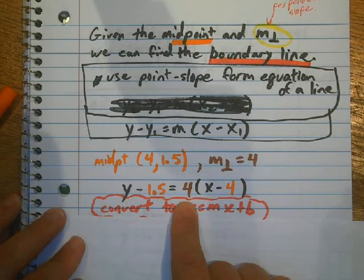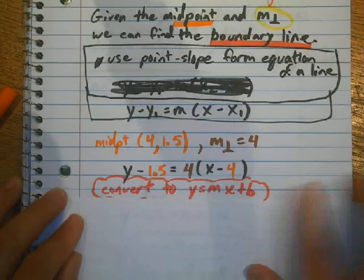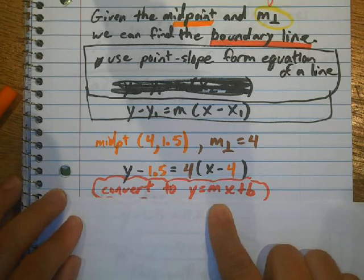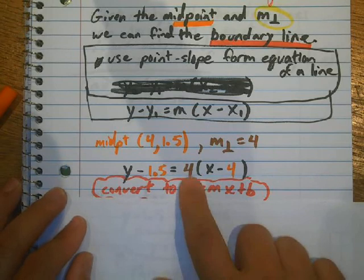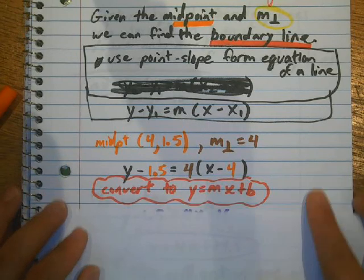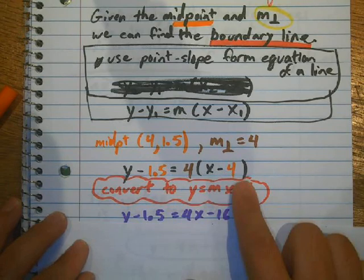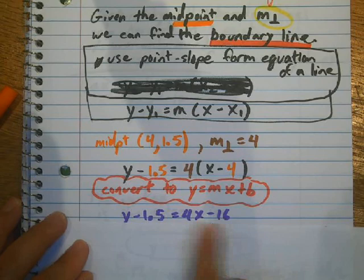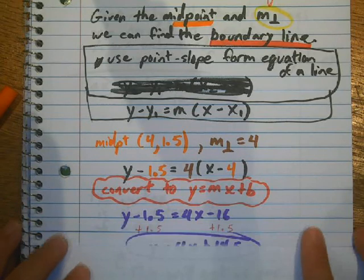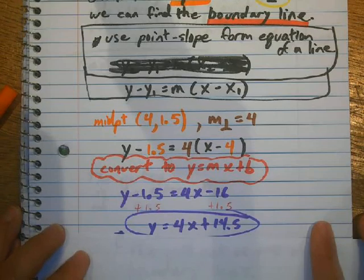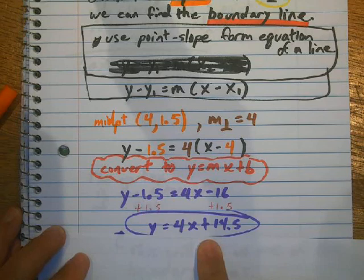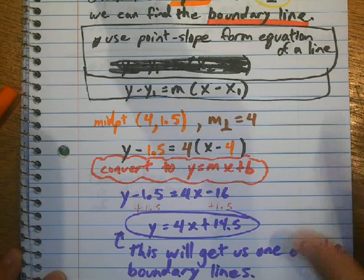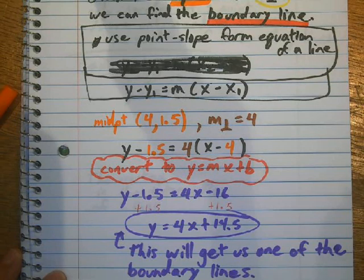Okay, now, we need to convert this to y equals mx plus b. Okay, and I'll explain why we need it in this version in just a minute. So, what do I do? I just distributive property with a 4. So, then I get 4x minus 16. And now, I have to add 1.5 on both sides. And there's my equation of the boundary line. Okay, so that gets us one of the boundary lines. We'll need to go through that process again to get another boundary line.